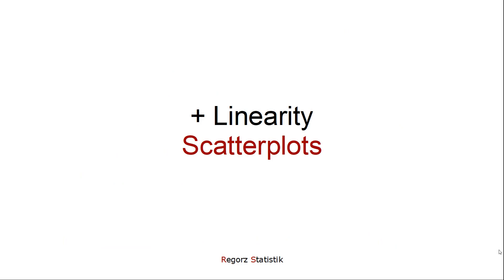In addition to running a robust regression, you should also check linearity, because robust regression doesn't protect you against the possible existence of a nonlinear relationship. So I would use scatter plots between the relevant variables.